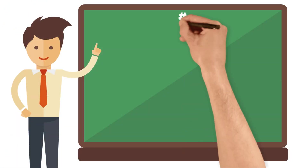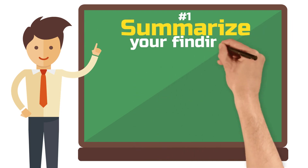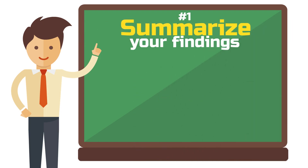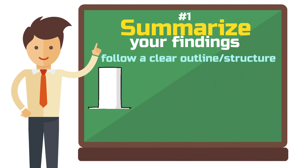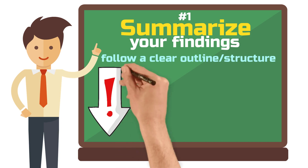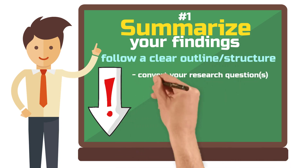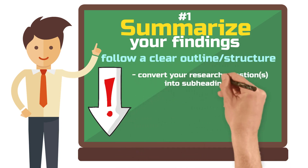Component number one: summarize your findings. On your quest to learn how to write a discussion chapter, you need a clear outline or structure to follow. The discussion is perhaps the most important chapter of the entire study, so you shouldn't leave anything to chance. The following tip is worth its weight in gold for structuring your discussion — and it's simply to convert your research questions into subheadings.